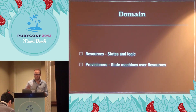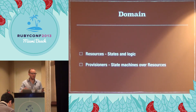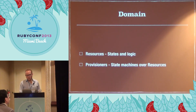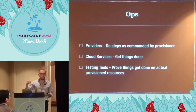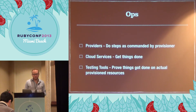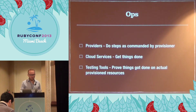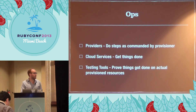All this happens in the background, usually when you ask for a resource to change state. The provisioner determines what it needs to do to change that state and goes about doing that. It uses the ops layer where providers are basically controlled by the provisioner state machines, communicating using success and failure and passing an options hash. The ops layer has lots of tools to use cloud services.